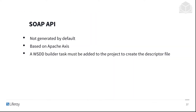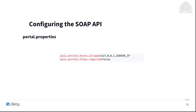Liferay DXP uses Apache Axis for the SOAP services. To generate the SOAP API for your custom application, the WSDD builder task has to be added to the project to create the web service definition. The WSDD creation process is described in detail in the developer tutorial section of dev.liferay.com. The hosts allowed to access the SOAP API can be defined explicitly in the portal.ext.properties file.